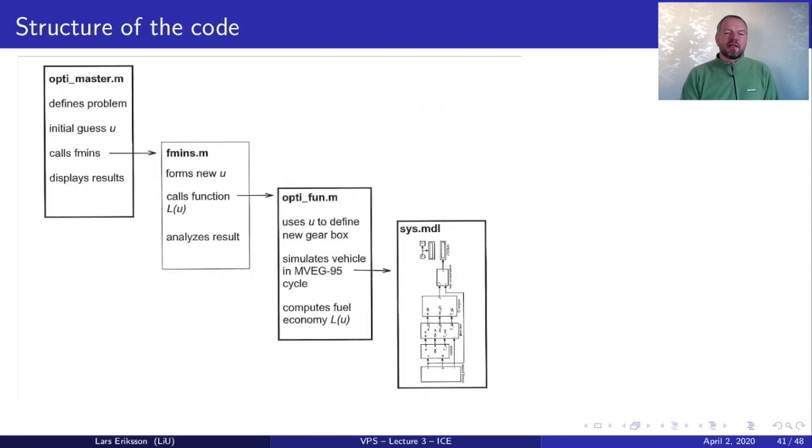The structure of a code looks like this. The simulation model is evaluated down here at the bottom. And then we have built up a skeleton of functions. We have an optimization master that sets up the problem defines an initial guess. And then it calls the function fmeans which is fmeans search. So we search a minimum for this function. And the function that we will utilize is called optimization function. And this one then uses the selected gear ratios to simulate the cycle. The simulation returns the fuel consumption that is returned up to the optimization tool that iterates until it's satisfied.